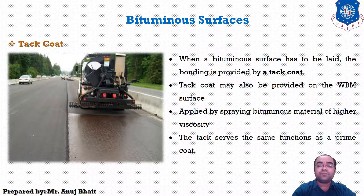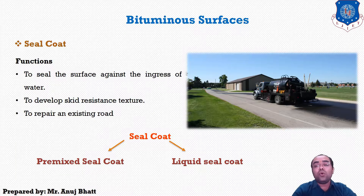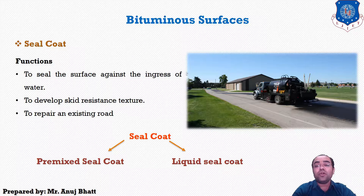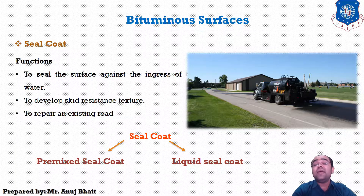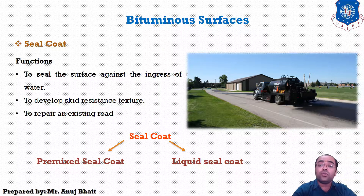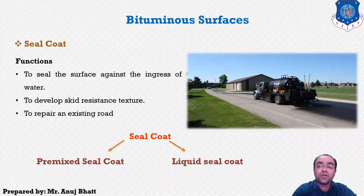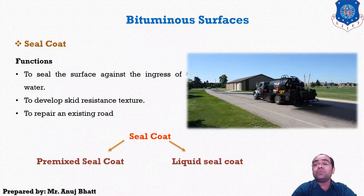A seal coat consists of a single, very thin surface coat applied over certain bituminous pavements such as bituminous bond macadam, grouted macadam, or premix carpet, which are not impervious. The main function of the seal coat is to seal the surface against water ingress, to develop skid-resistant texture, and to repair existing defects. There are two types: premixed seal coat and liquid seal coat.